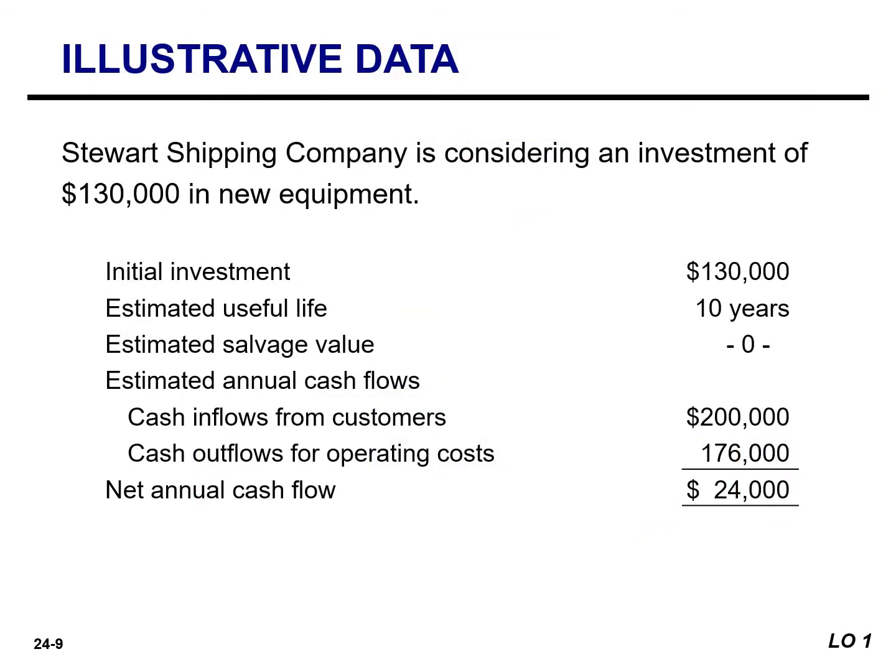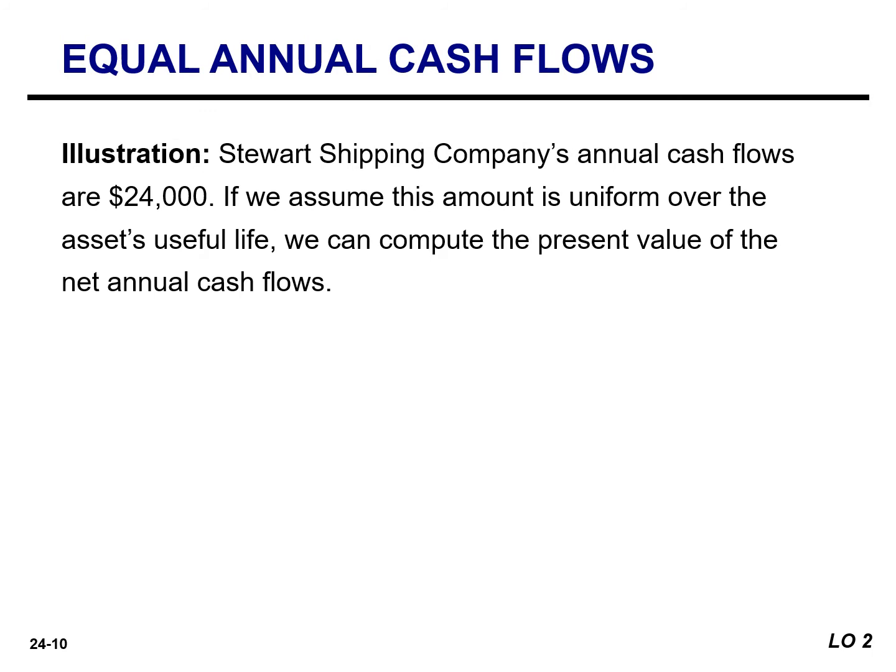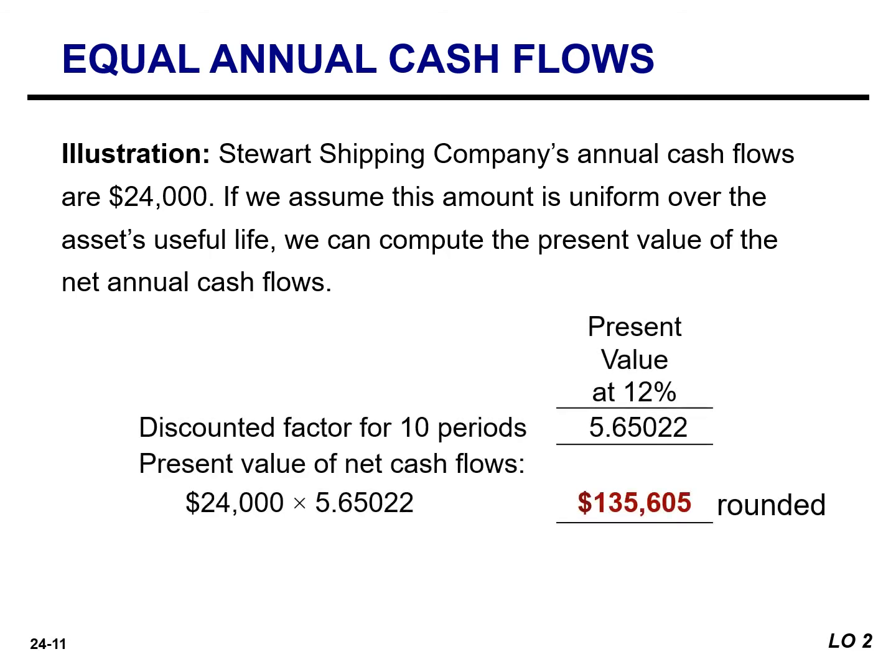Let's calculate the net present value to determine if this company should purchase equipment for $130,000. The company's net annual cash flows are $24,000. Assuming this amount is uniform over the asset's useful life, we can compute the present value of the net annual cash flows using the present value of an annuity of 1 for 10 payments. Assuming a discount rate of 12%, the PV factor is 5.65022. Multiplying the net annual cash flows of $24,000 by the PV factor, we obtain a present value of net cash flows of $135,605.